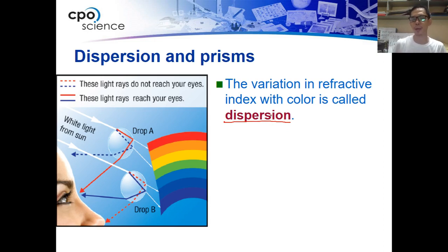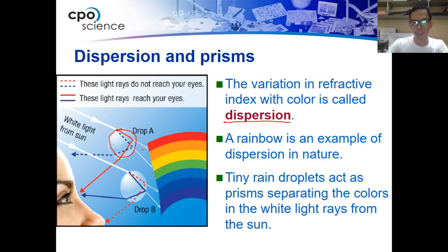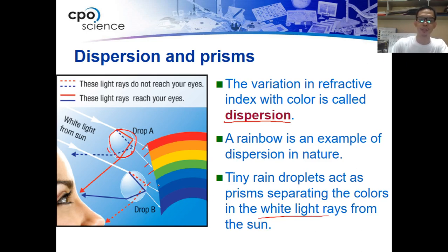Dispersion is another process but it is under refraction. What happens is when light passes through a material — in this case a tiny water droplet — it is dispersed to the point that white light is scattered into its different colors. The refractive material separates the colors of white light from the sun, producing what we call a rainbow.